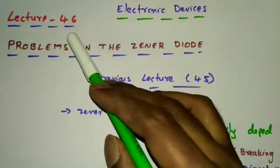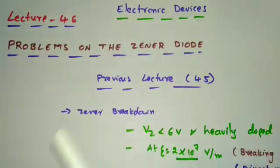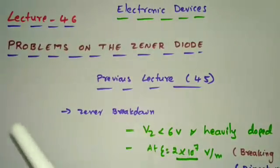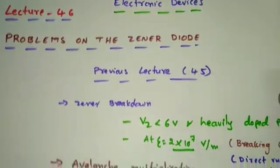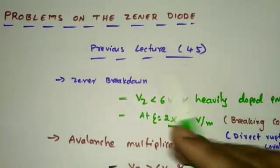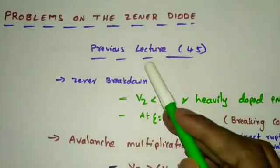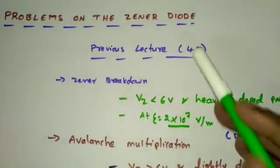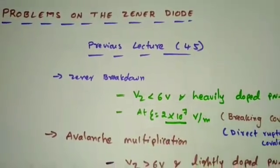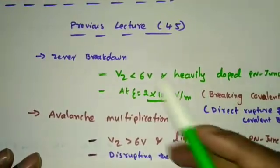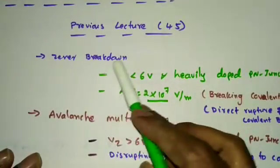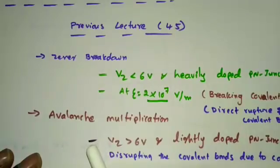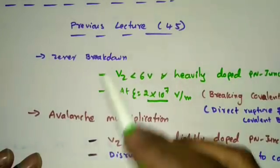Hi everyone, this is Lecture 46 in the Electronic Devices course. In this lecture I will discuss some previous GATE problems on the Zener diode concept. But first we will recap what we covered in Lecture 45, where we discussed two breakdown mechanisms: Zener breakdown and avalanche multiplication.